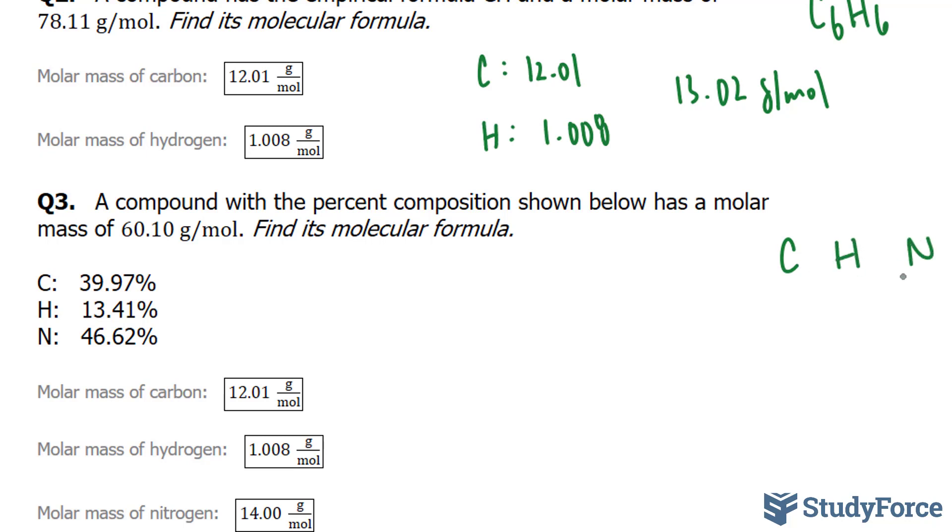H, and N with unknown subscripts. To find the empirical formula using percentages, you have to assume that we have 100 grams. And if we have 100 grams of this unknown compound, we would have 39.97 grams, 13.41 grams, and 46.62 grams. And using this, we can find out the moles.